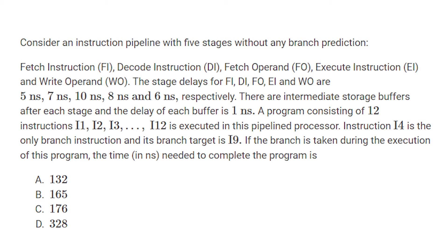There are intermediate storage buffers after each stage and the delay of each buffer is 1 nanosecond. A program consisting of 12 instructions I1 to I12 is executed in this pipelined processor. Instruction I4 is the only branch instruction and its branch target is I9. If the branch is taken during the execution of this program, the time in nanoseconds needed to complete this program is.